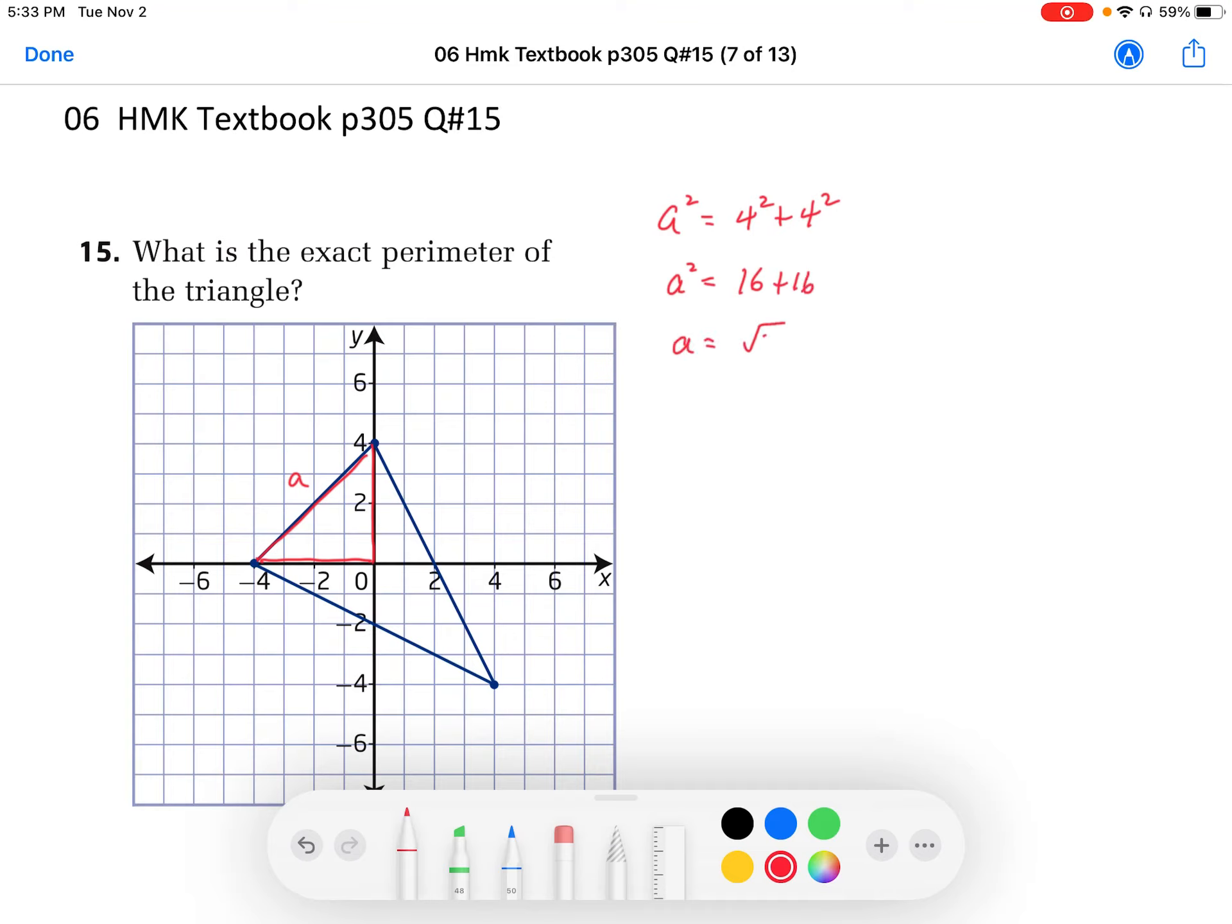A squared is equal to square root 32, which we should simplify to factor out the 16. And we're left with 2 in the square root. So 32 is the same as 16 times 2. So 16 becomes 4 on the outside.